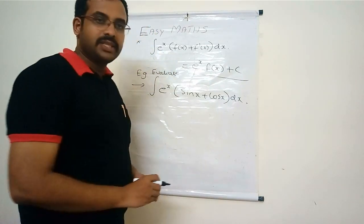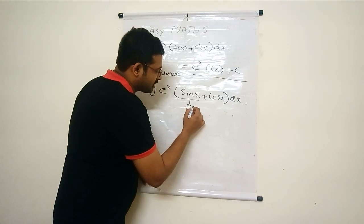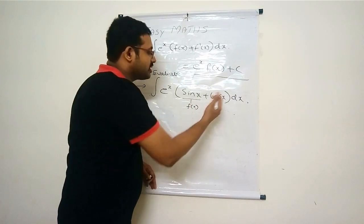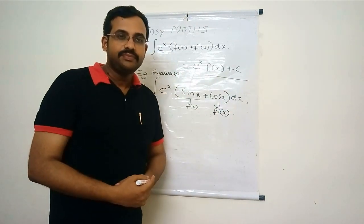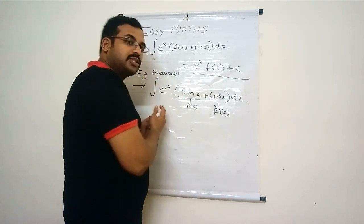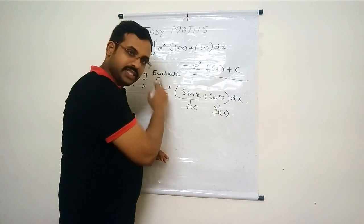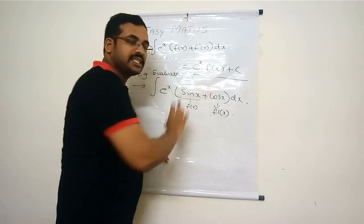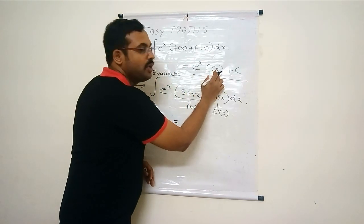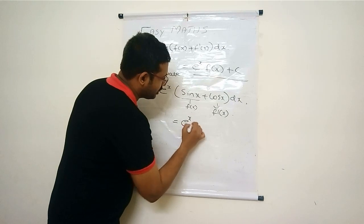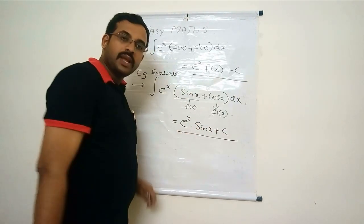Suppose we choose sin x as f(x). The derivative of sin x is cos x, so that is f'(x). This question is therefore of the form ∫eˣ[f(x) + f'(x)]dx, and we can directly write the answer: eˣ·f(x) + C = eˣ·sin x + C.